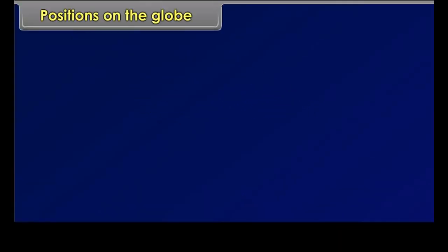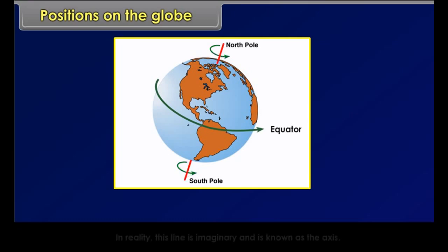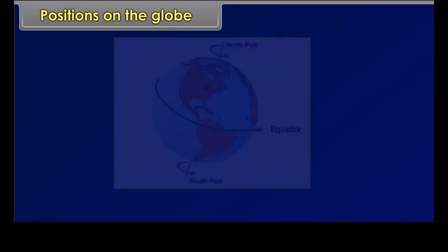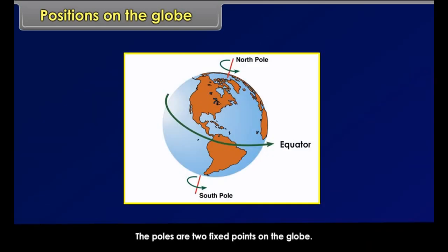Positions on the globe: On the globe, a line passes right through the middle of the earth. In reality, this line is imaginary and is known as the axis. The earth rotates on its axis. The two ends of the axis are called poles — north pole and south pole. The poles are two fixed points on the globe.